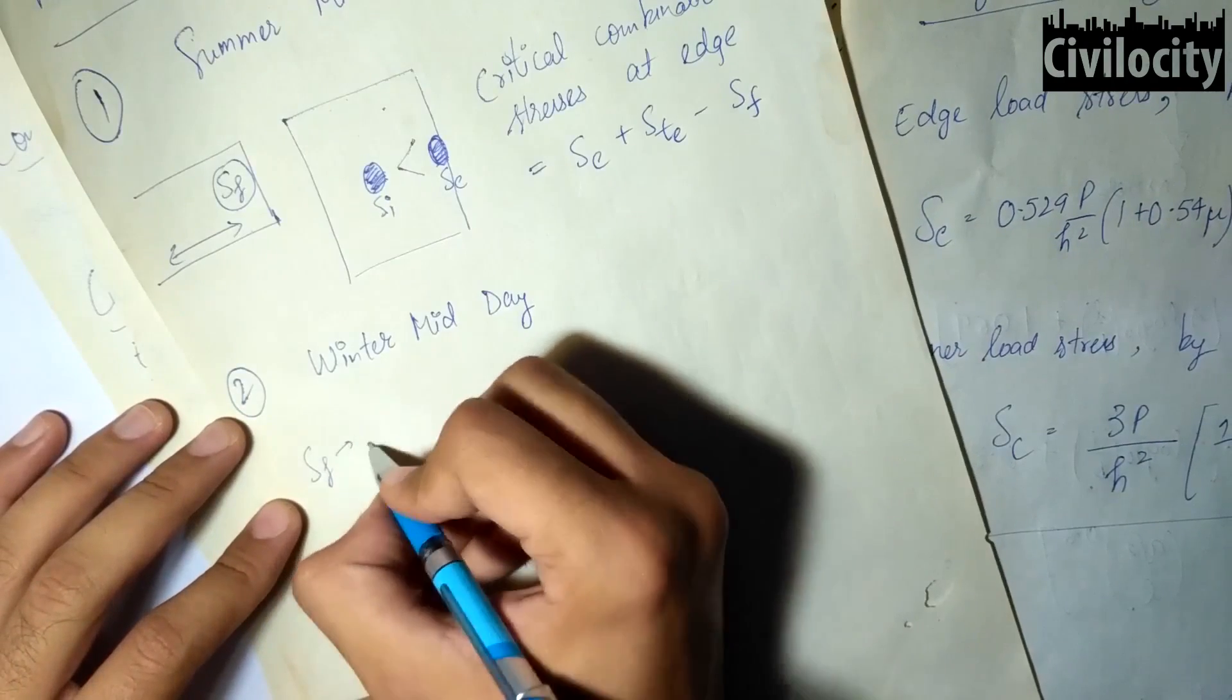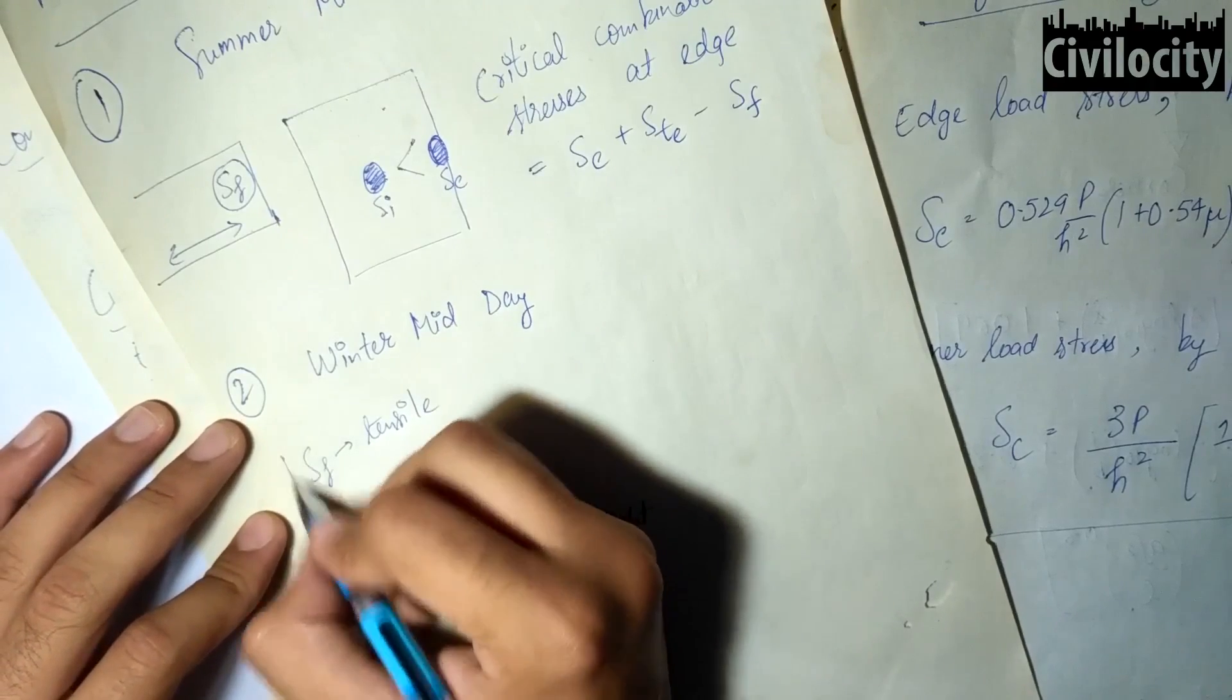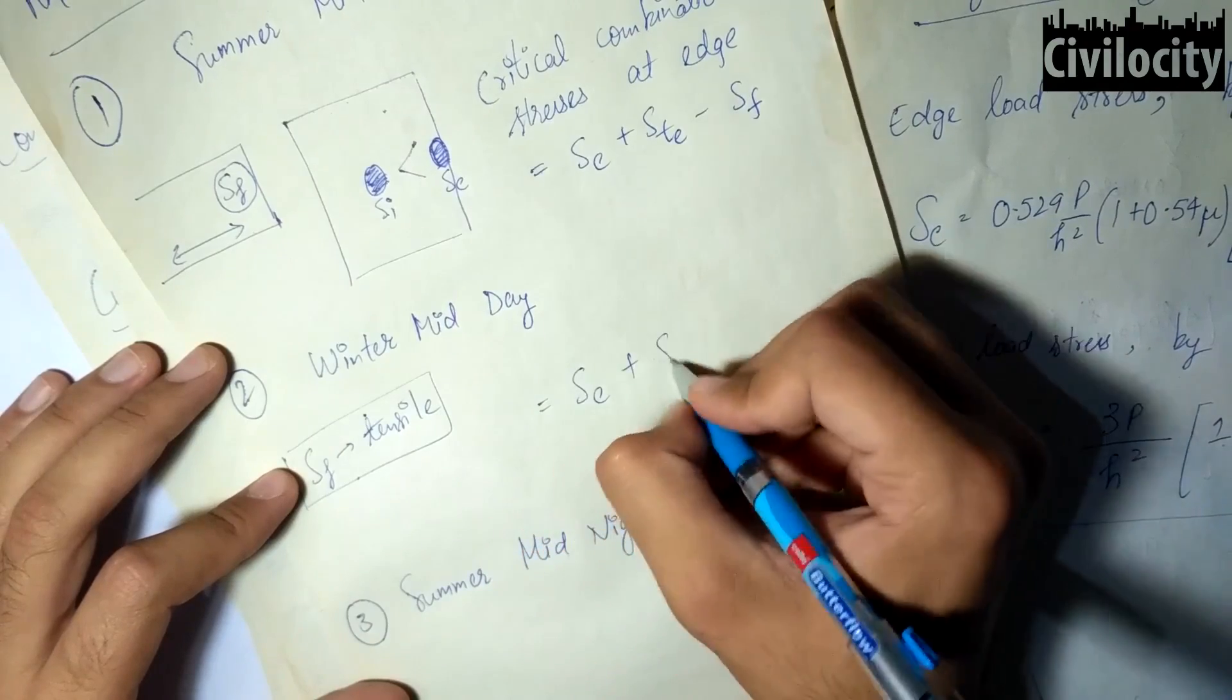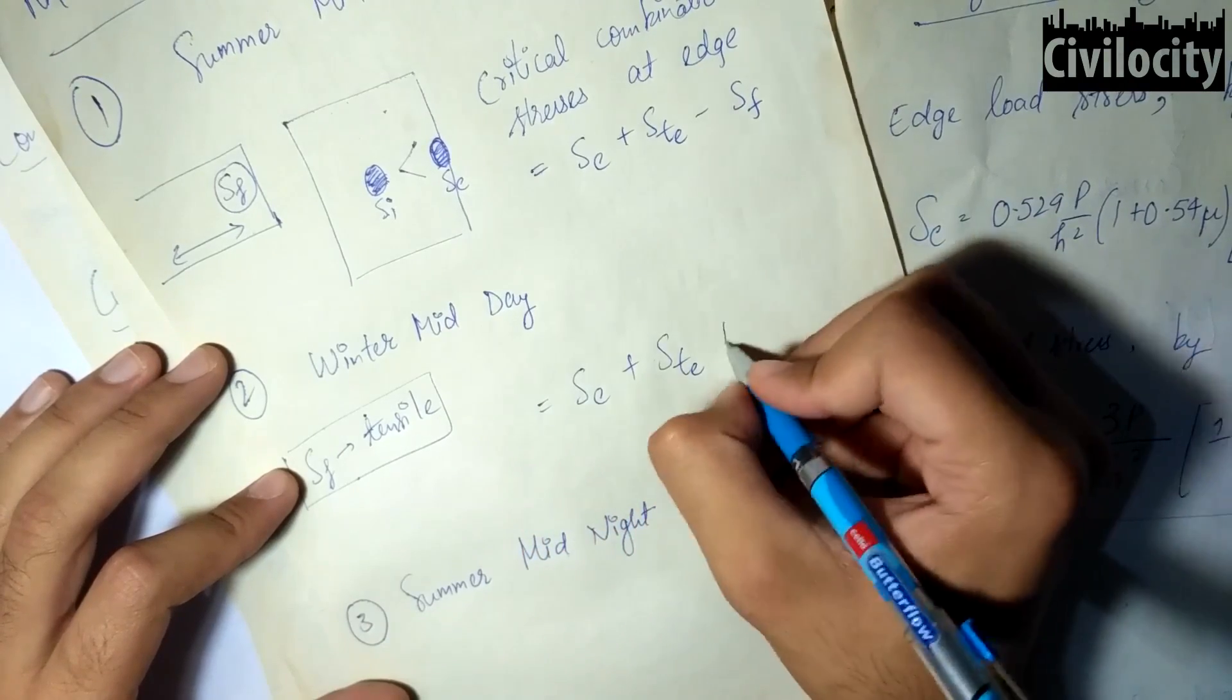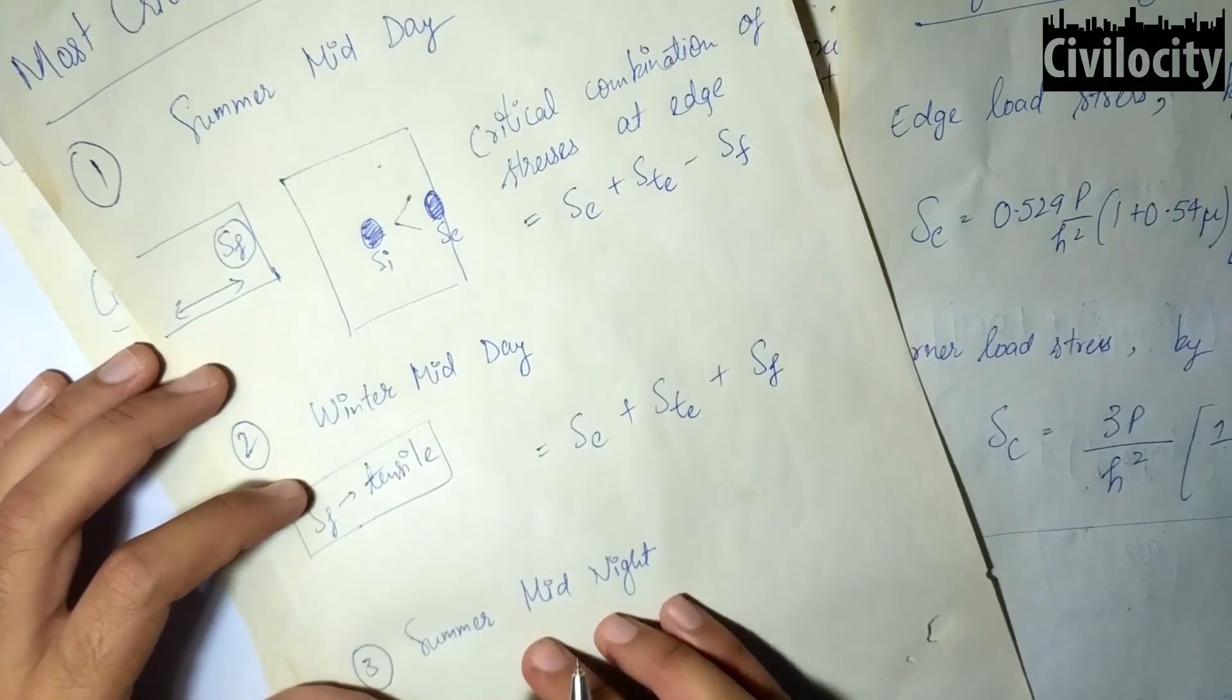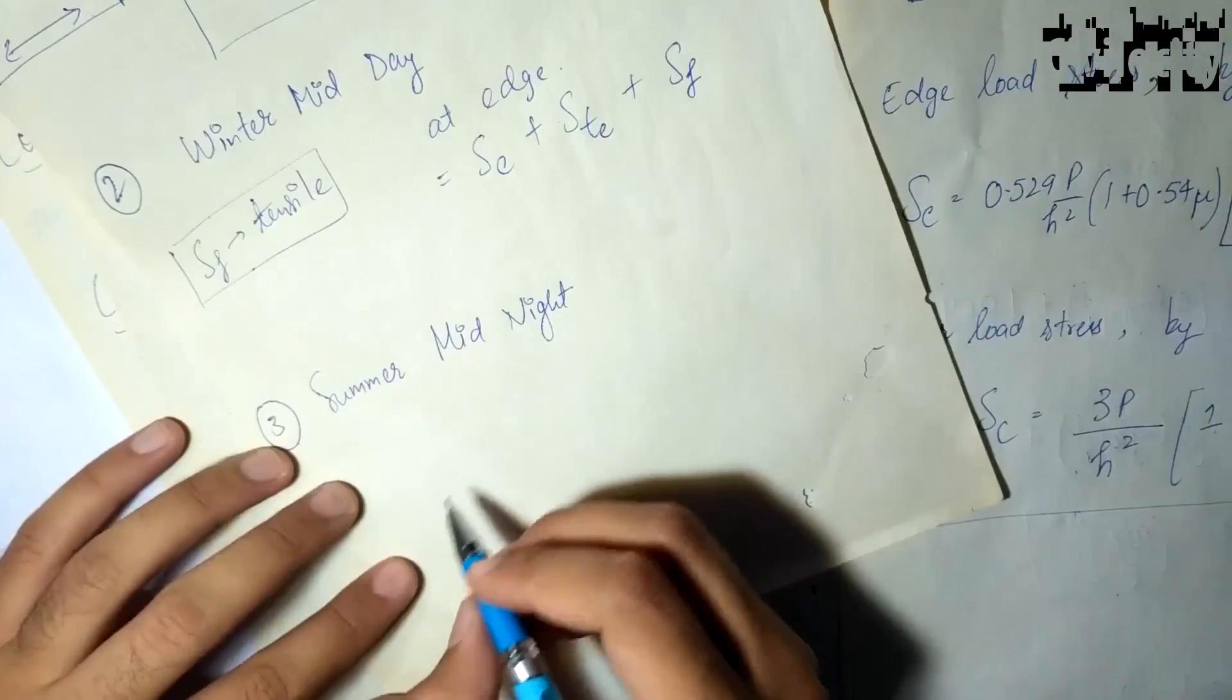During the winter midday, everything is the same except that the frictional stress is tensile during the winter season due to contraction of the slab. So this critical combination is given as SE plus STE plus SF, that is load stress plus warping stress plus frictional stress.